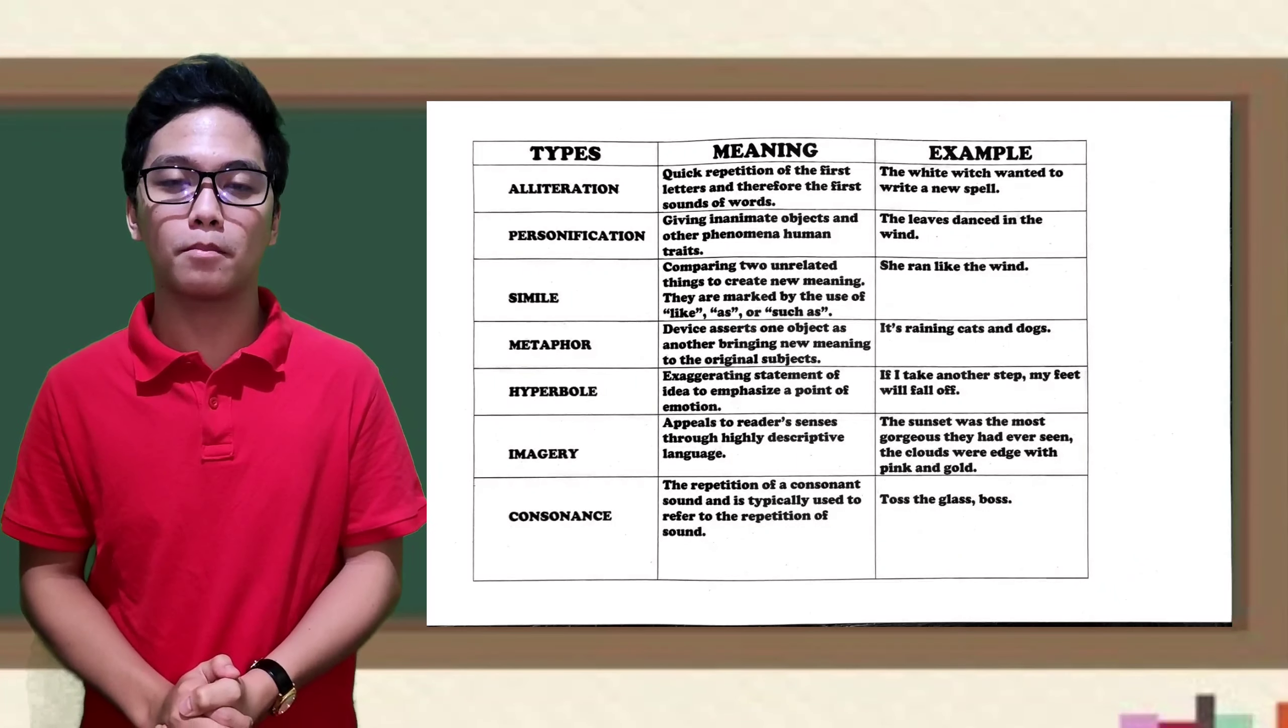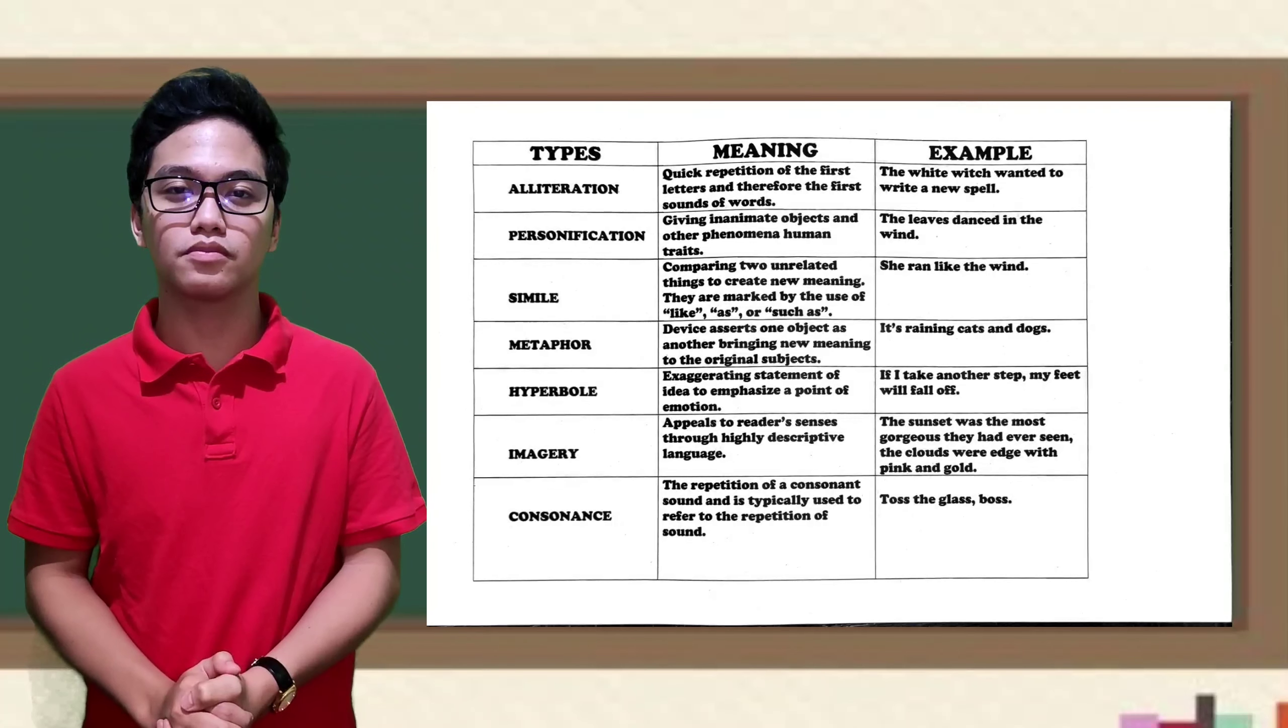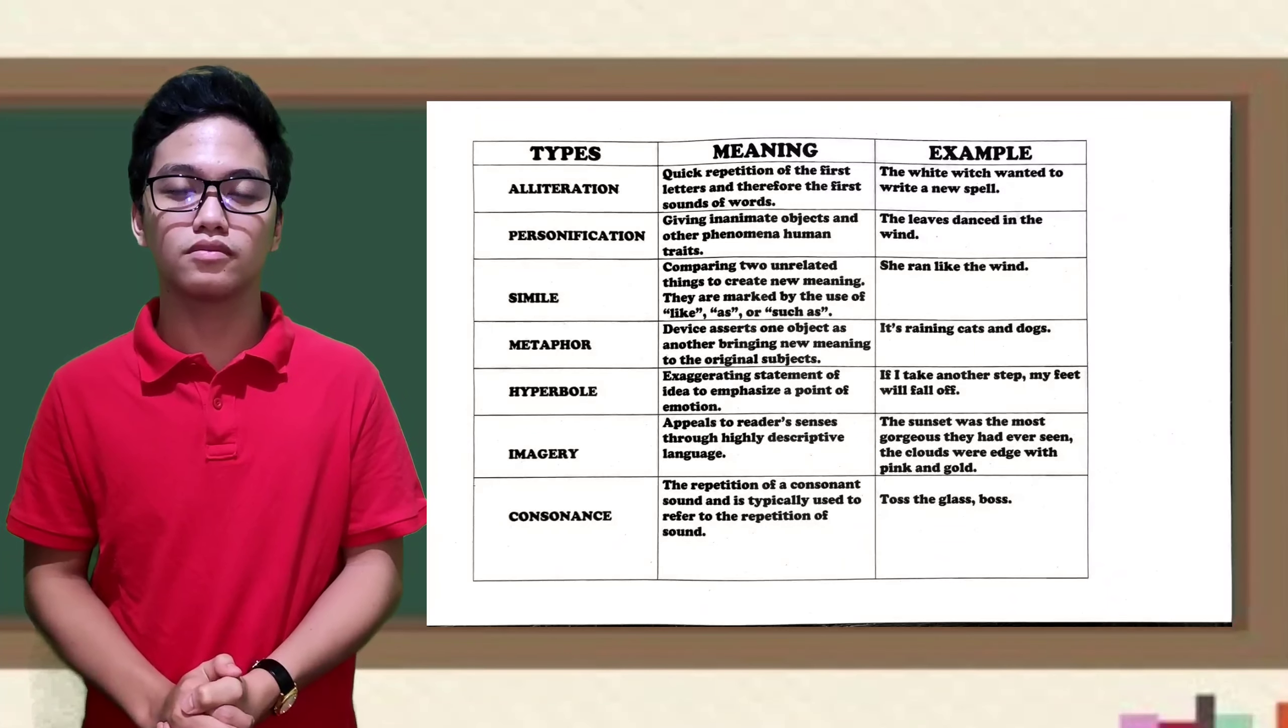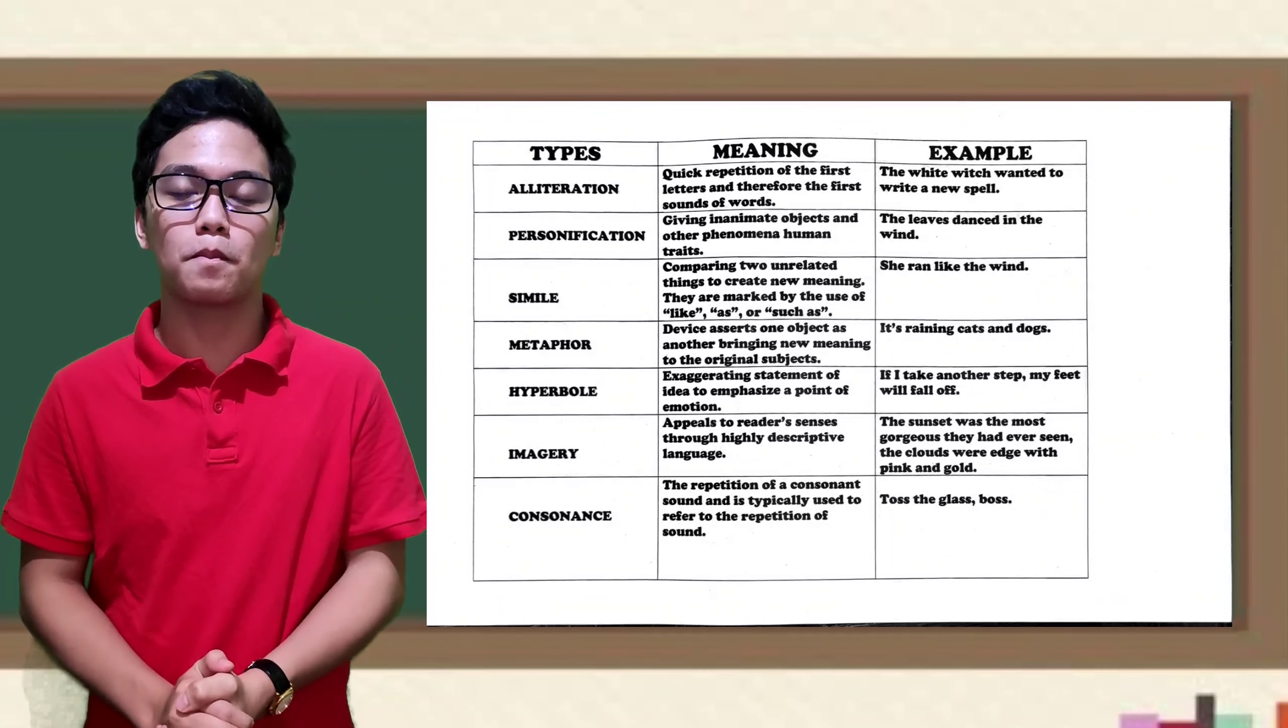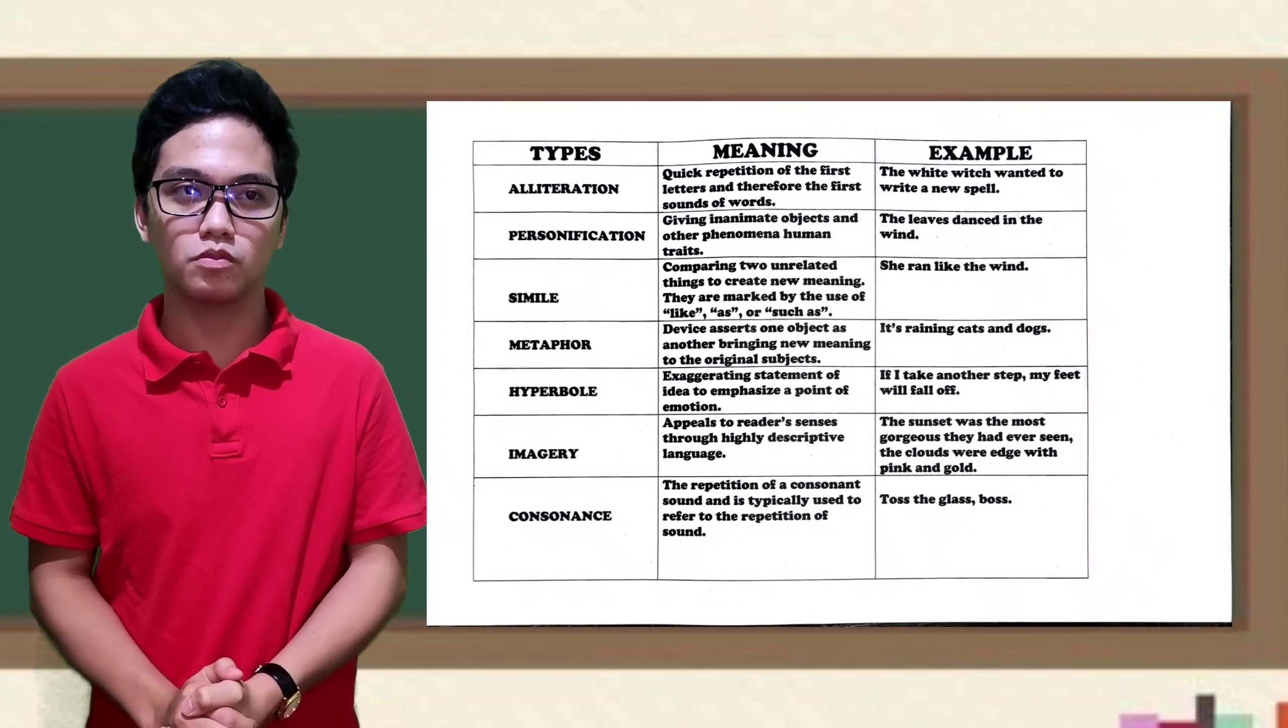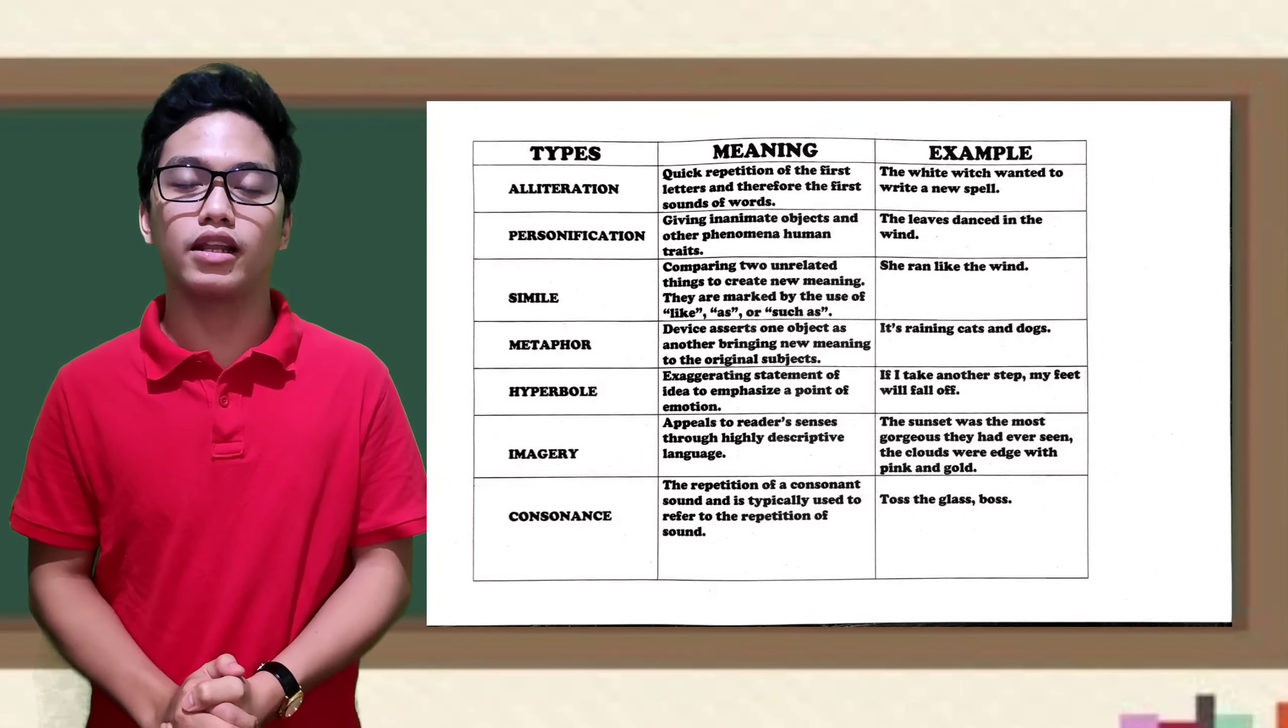Imagery. Imagery appeals to readers' senses through highly descriptive language. Example, the sunset was the most gorgeous day had ever seen. The clouds were edged with pink and gold. And lastly, number seven?